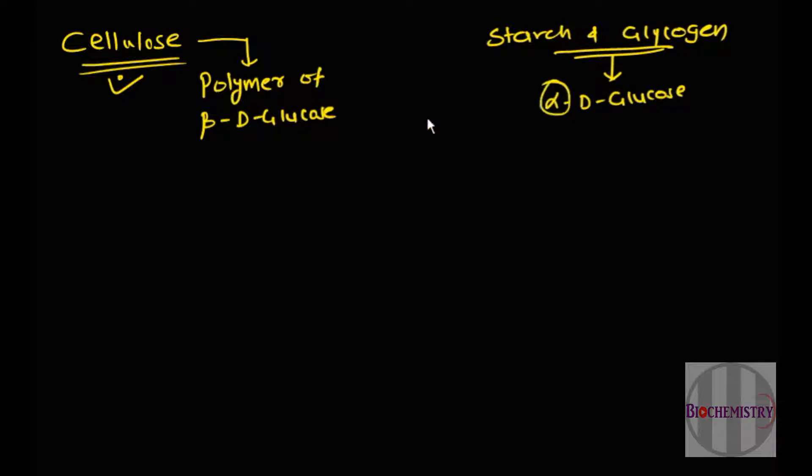So the difference between cellulose and starch is in the anomeric form of glucose. In starch and glycogen the anomeric form is alpha, whereas in case of cellulose that form is beta. Let's see how this anomeric change leads to its three-dimensional structural changes.